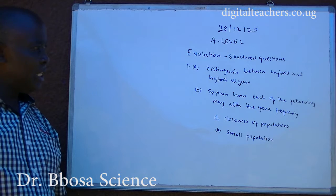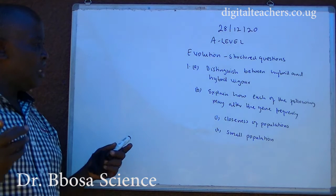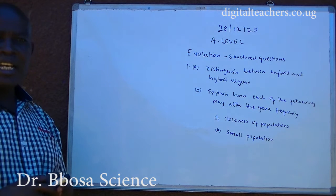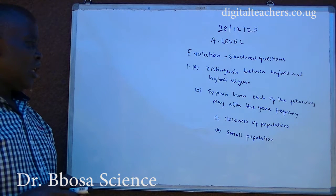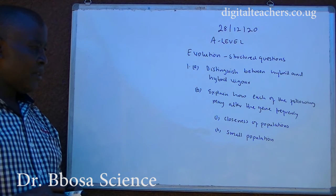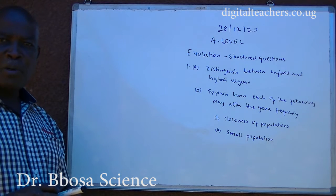Number one, A. Distinguish between hybrid and hybrid vigor. B. Explain how each of the following may alter gene frequency. One, closeness of populations. Two, smaller population.